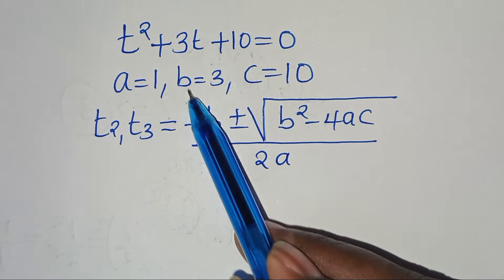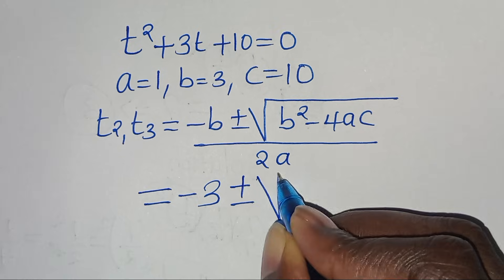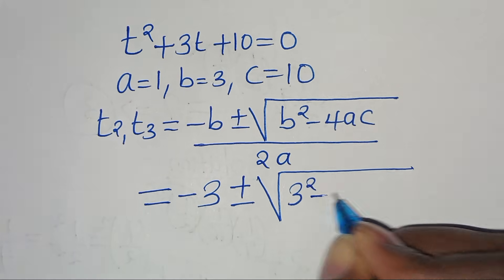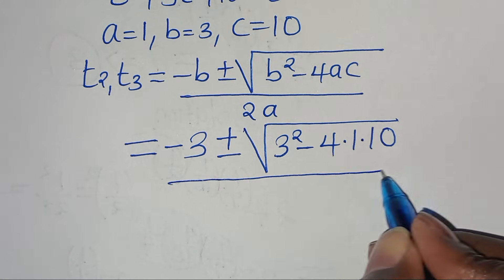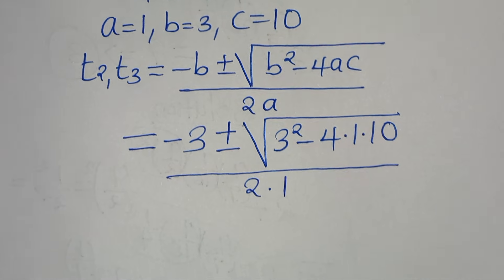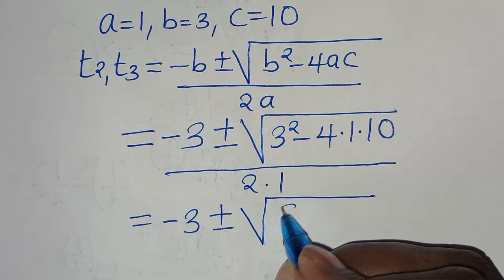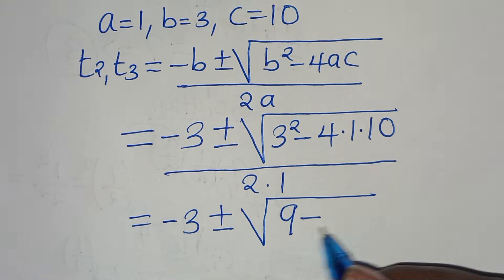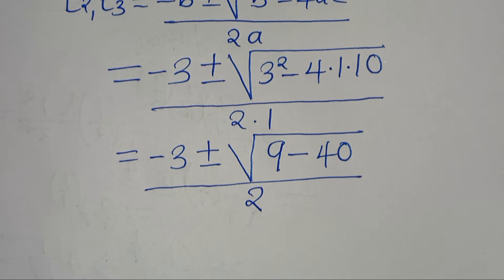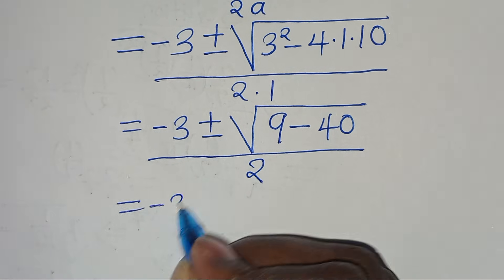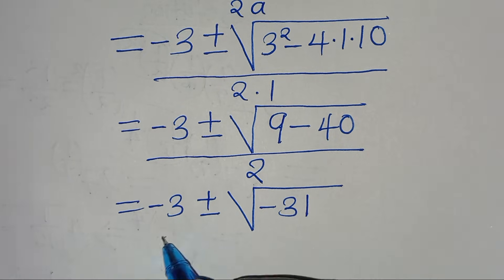Substituting the values, we get: minus 3 plus or minus the square root of 3² minus 4 times 1 times 10, all divided by 2 times 1. This simplifies to minus 3 plus or minus the square root of 9 minus 40, which is the square root of minus 31, all divided by 2.